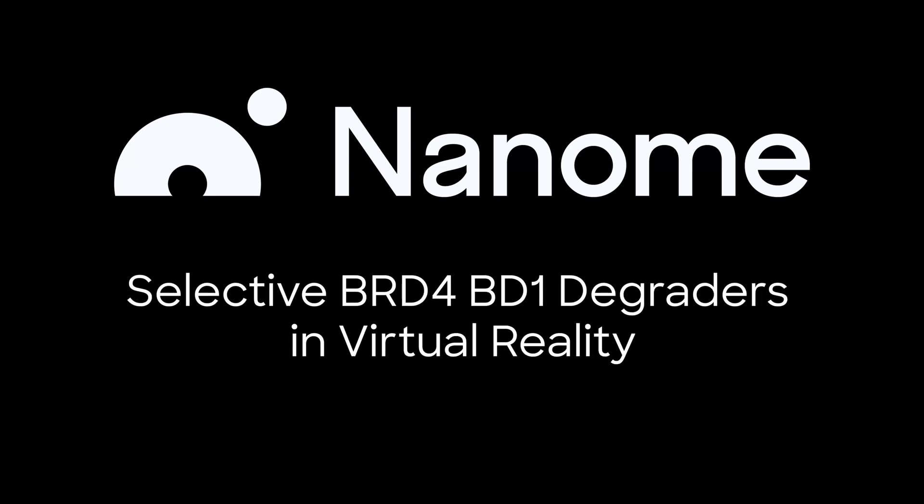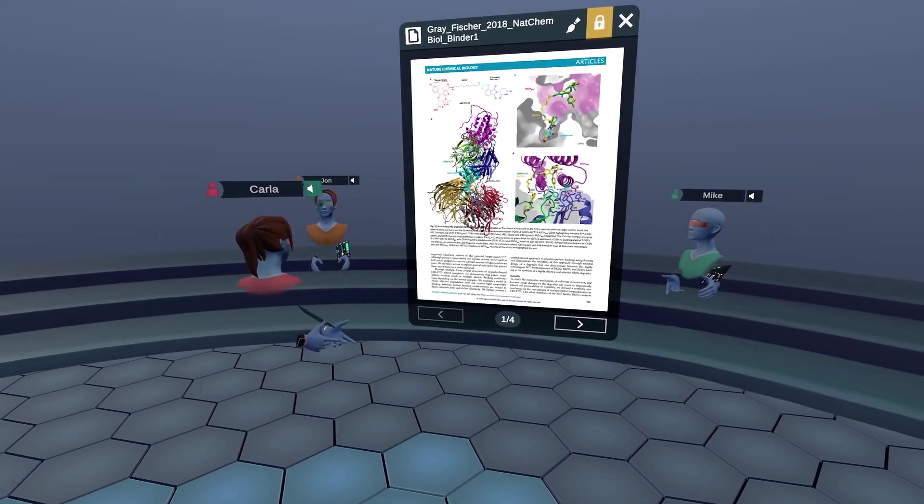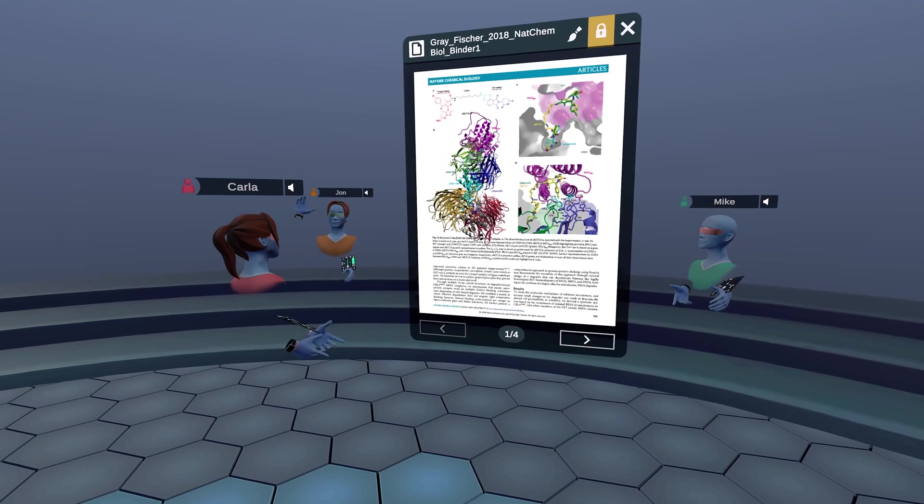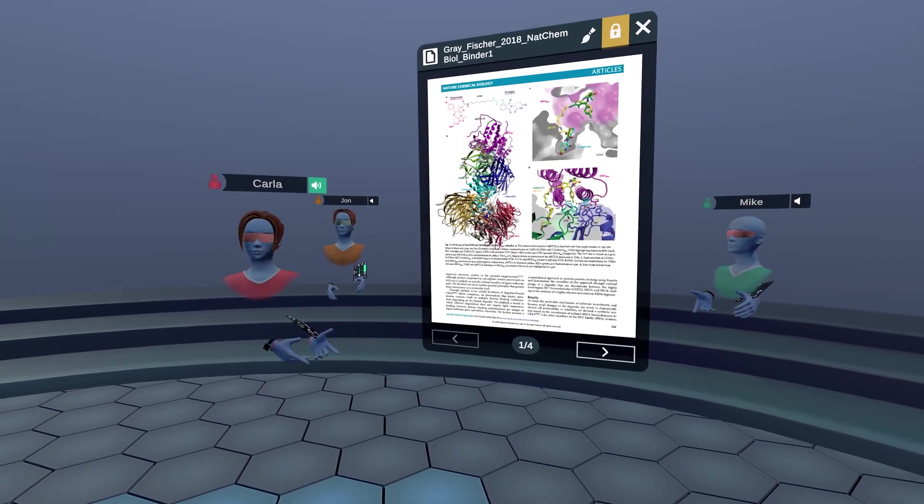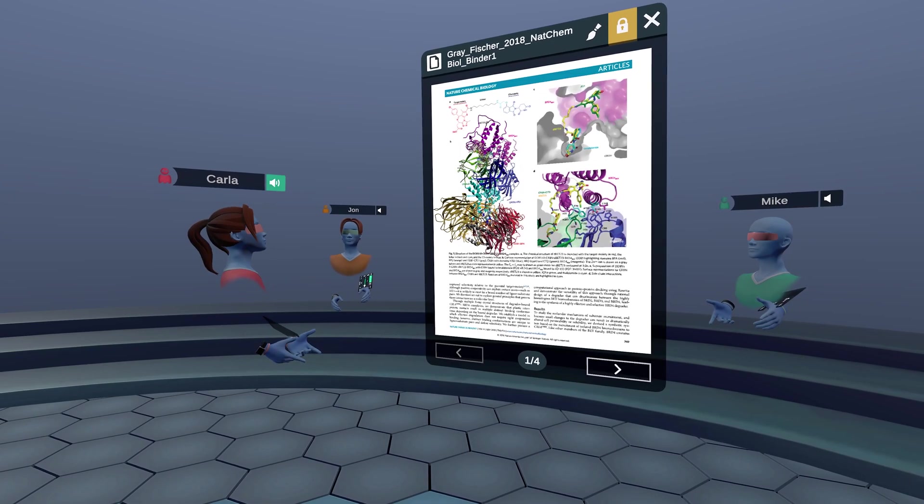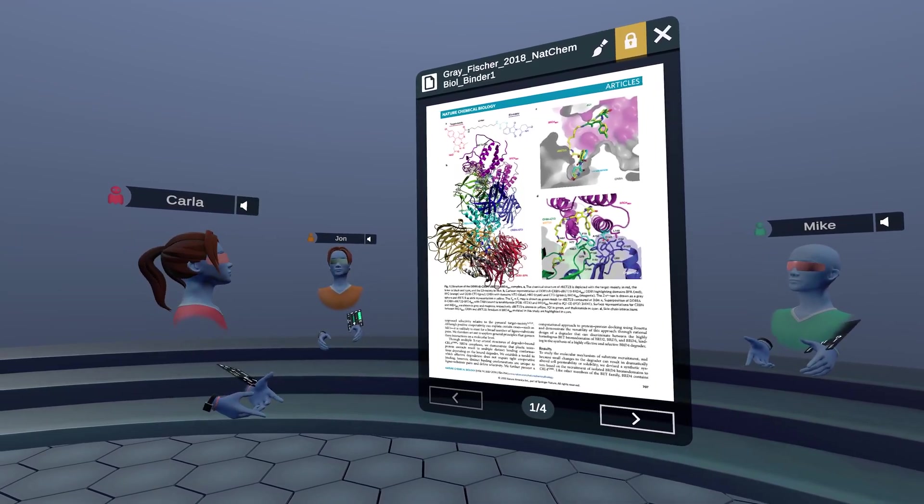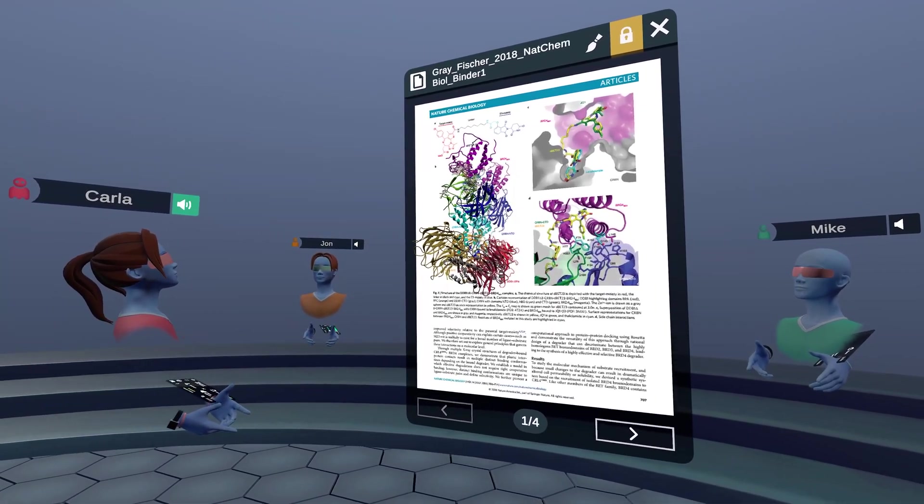Hello everyone, and welcome to Nanome. Today I'm joined by two of my colleagues, Mike and John, and we're going to be discussing degradation of bromodomains today. In particular, this paper by Gray and Fisher published in 2018 in Nature Chemical Biology.